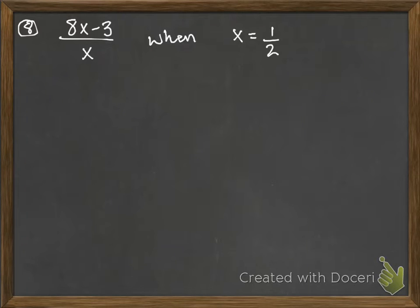Looking at number 8, it says when x is 1/2. Some people may want to change that to 0.5. What is the value of this expression, 8x minus 3 over x?